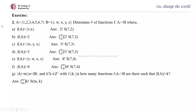Second exercise: A = {1, 2, 3, 4, 5, 6, 7}, B = {V, W, X, Y, Z}. Determine the number of functions F from A to B where F(A) = {V, X}. This means all elements of A are only associated with V and X. The answer is 2! × S(7, 2).